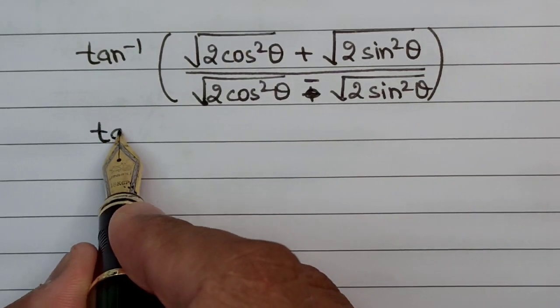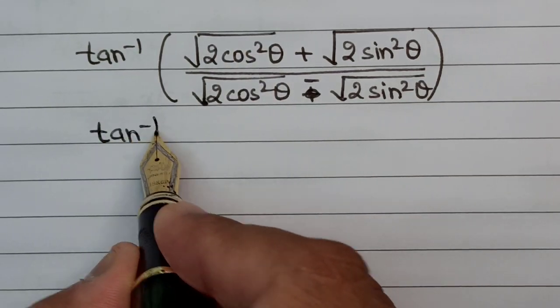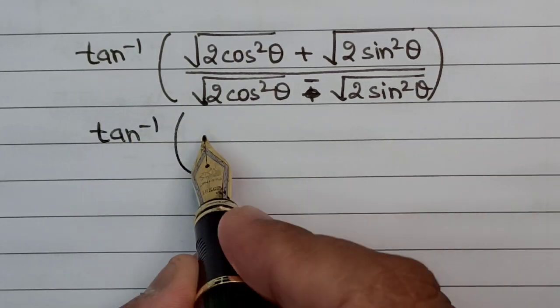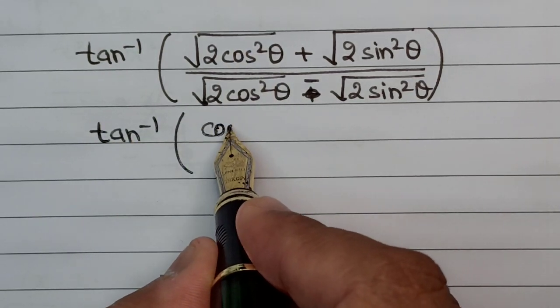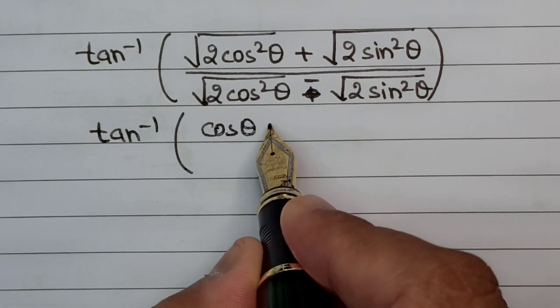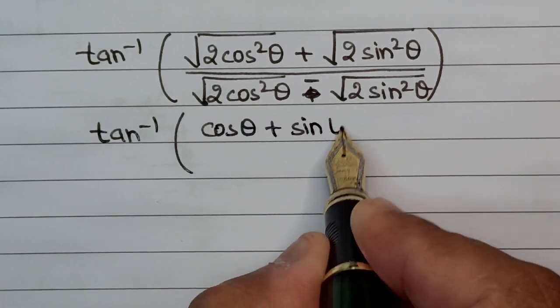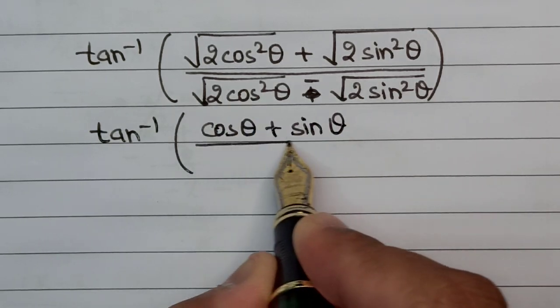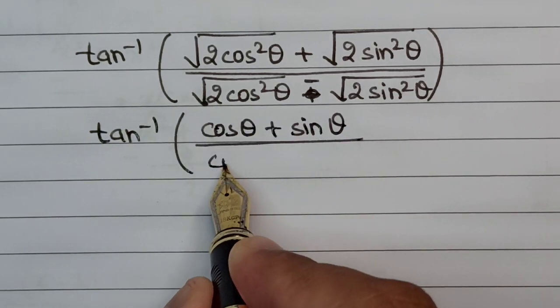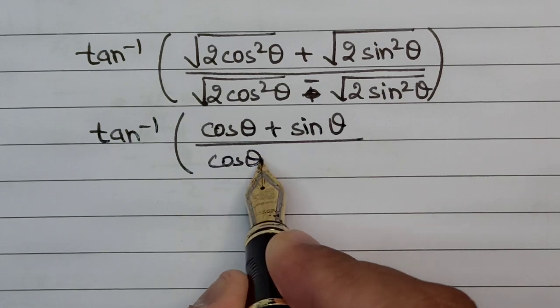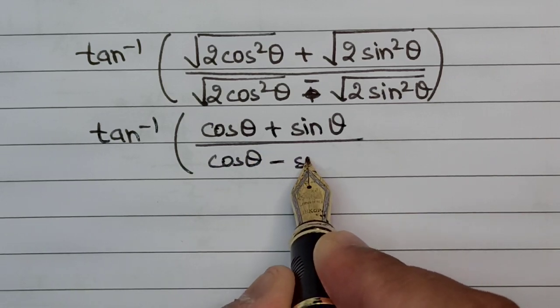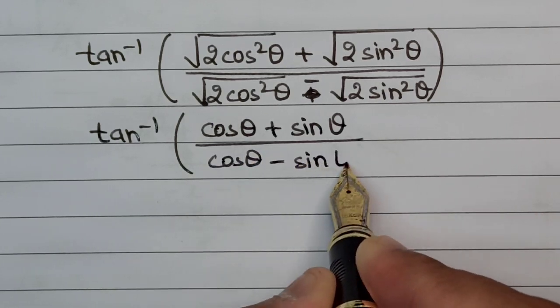All we are left with is tan inverse of (cos θ + sin θ) divided by (cos θ − sin θ).